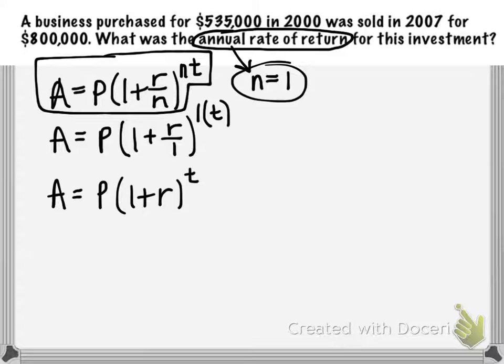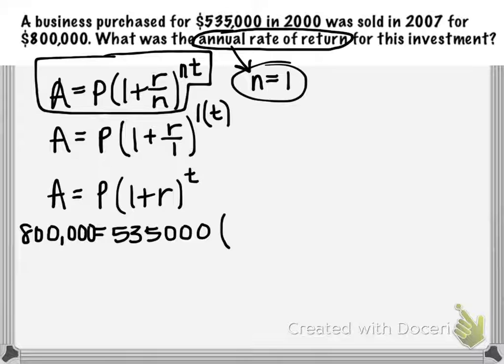Our principal amount P is the initial amount we purchased the business for, which was $535,000. Our accumulated value A is the $800,000 that the business was worth when we sold it. So we have a $535,000 investment that grew to $800,000, and our time t is seven years.